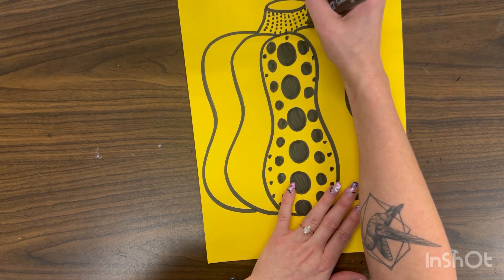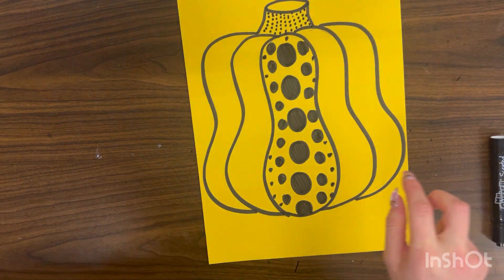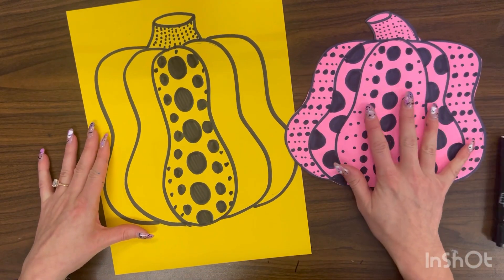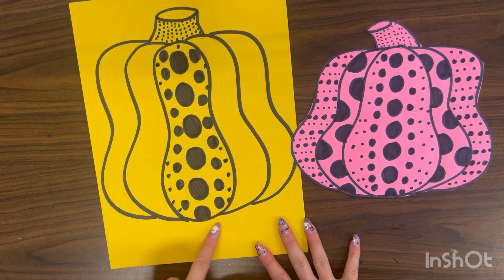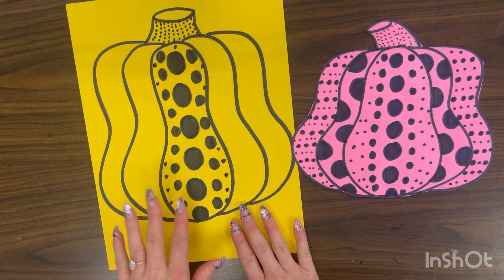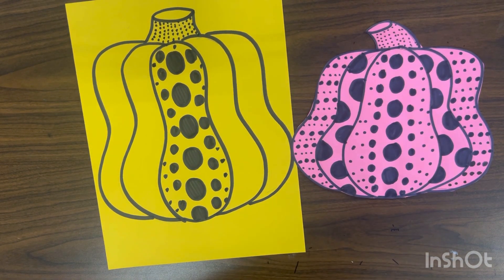Once we're all done, you're going to turn it in and put your name and class code on the back. You'll have a pumpkin that's nice and full like this. We're going to cut them out next time, but today we're focusing on drawing our abstract pumpkin like Yayoi Kusama and adding our polka dots. All right friends, I can't wait to see them. Happy creating.